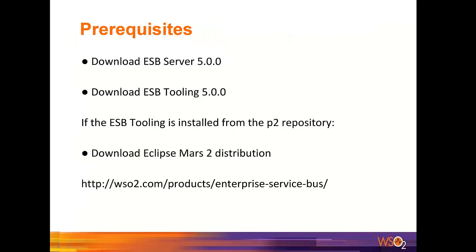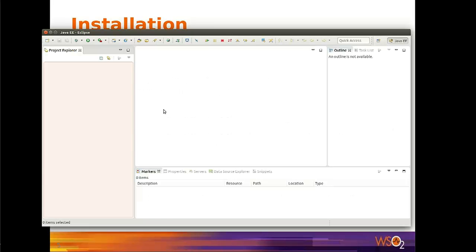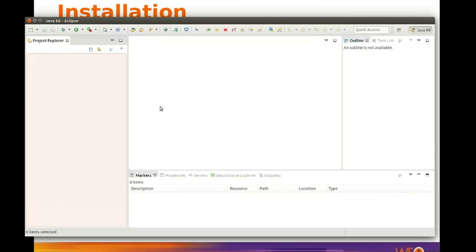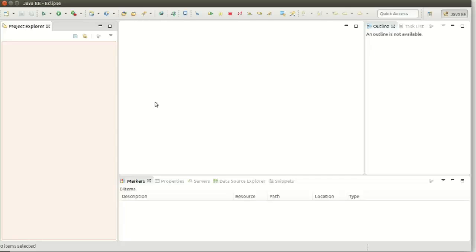You have to download ESB Tooling 5.0 and ESB Server 5.0 from the ESB product page shown here. If you are going to install ESB Tooling using P2 repo, you need Eclipse Mars 2 distribution downloaded and installed. Now, let's see how we can install ESB Tooling using the Online P2 Repository.